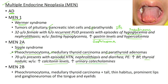MEN2B involves pheochromocytoma, medullary thyroid carcinoma, and tall thin habitus plus prominent lips and neurogangliomas of the tongue and eyelids. This picture shows the neurogangliomas seen in the case of MEN2B.